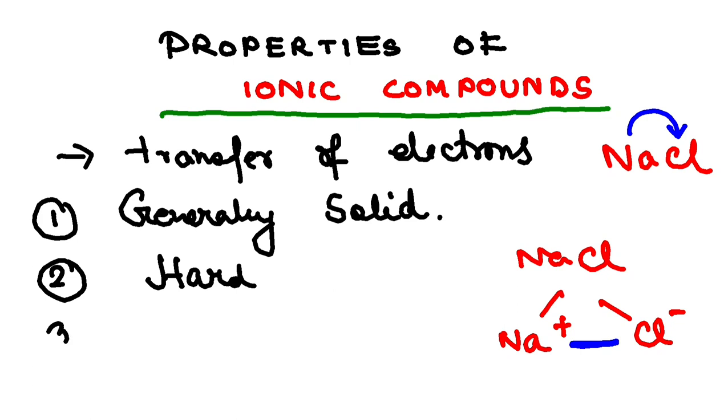The third property is that ionic compounds are brittle. Now, what is brittle? Can be broken into pieces very easily. So, ionic compounds can be broken into pieces very easily. These are the three properties.